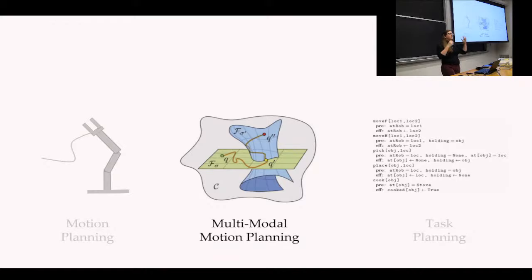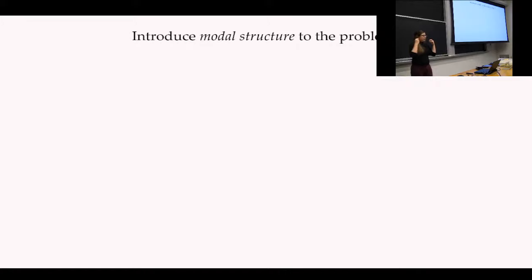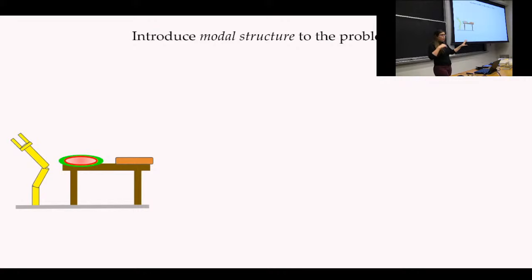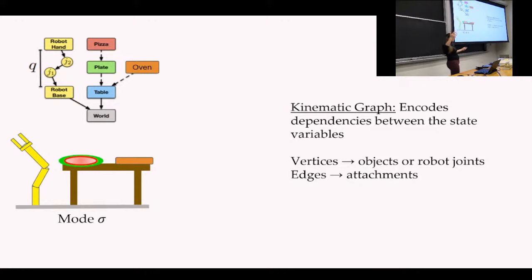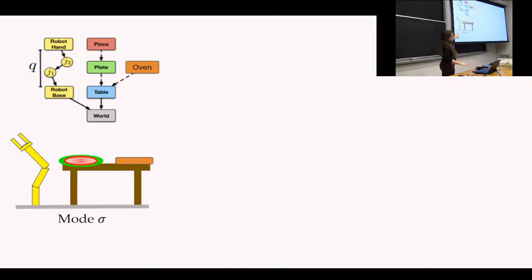By the end of this, you will understand and deeply appreciate the beauty of this figure. We need to introduce modal structure into the problem — this is where multimodal motion planning gets its name. Let's describe our scene with something called a kinematic graph, which represents the state of our world and encodes the dependencies. Each node corresponds to an object: we have nodes for our world, attached is our table, on top is our plate, on top of that is our pizza. The edges represent dependencies like being supported by or rigidly attached. We call what's represented by this mode sigma.